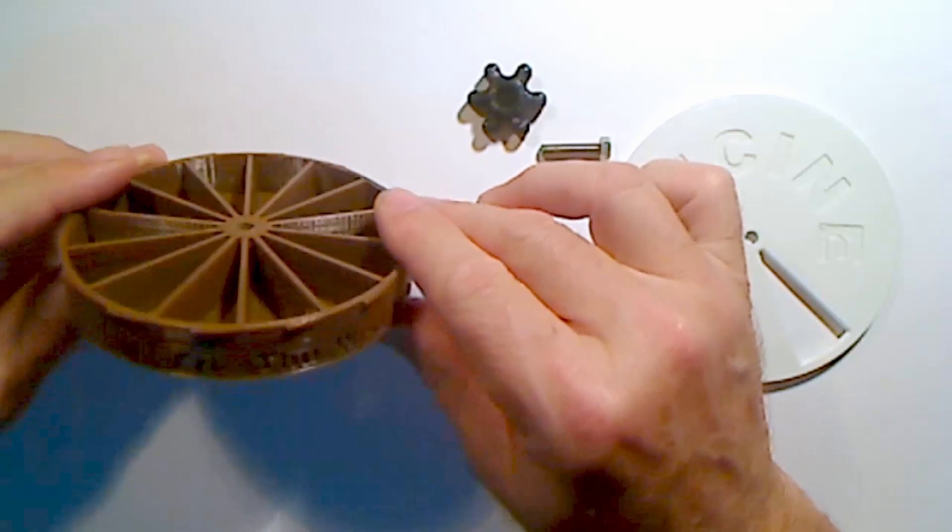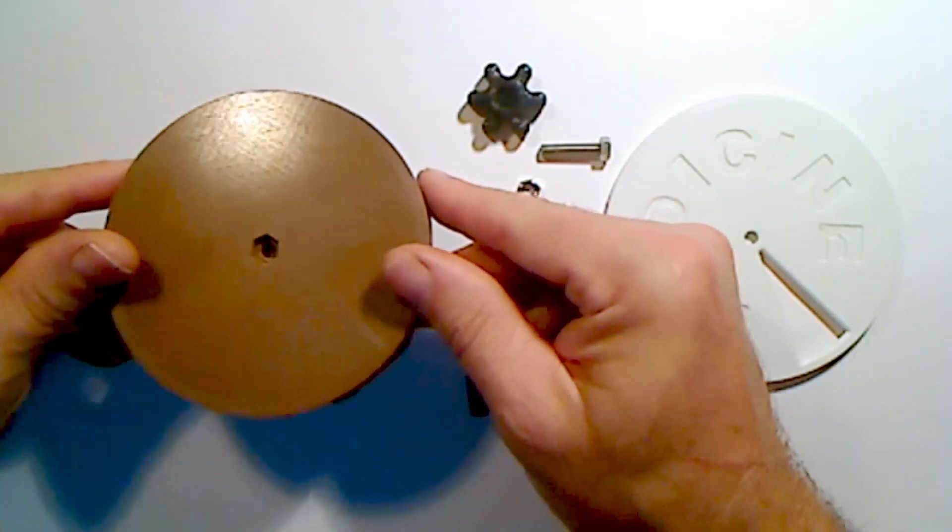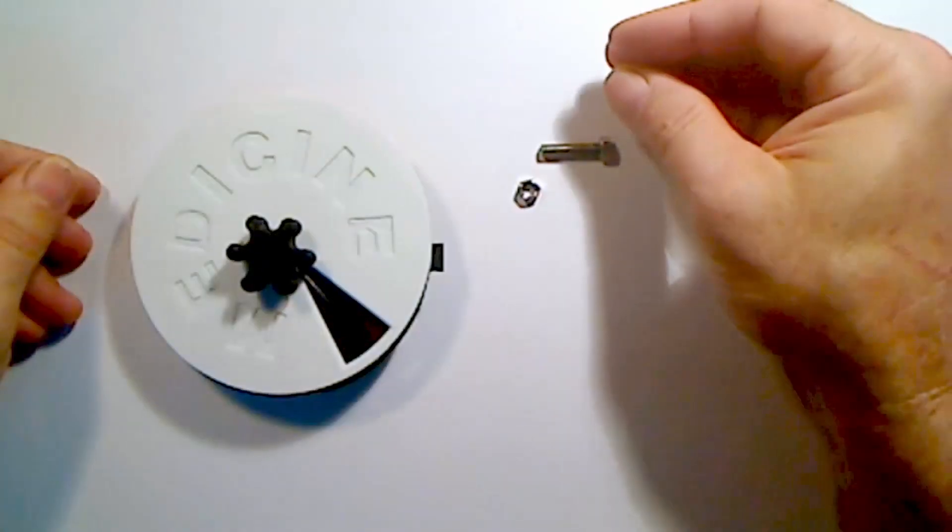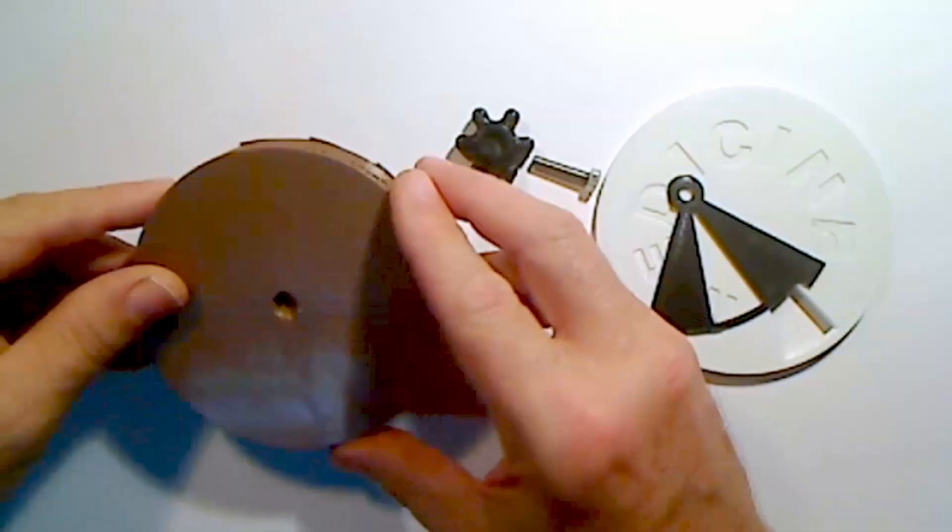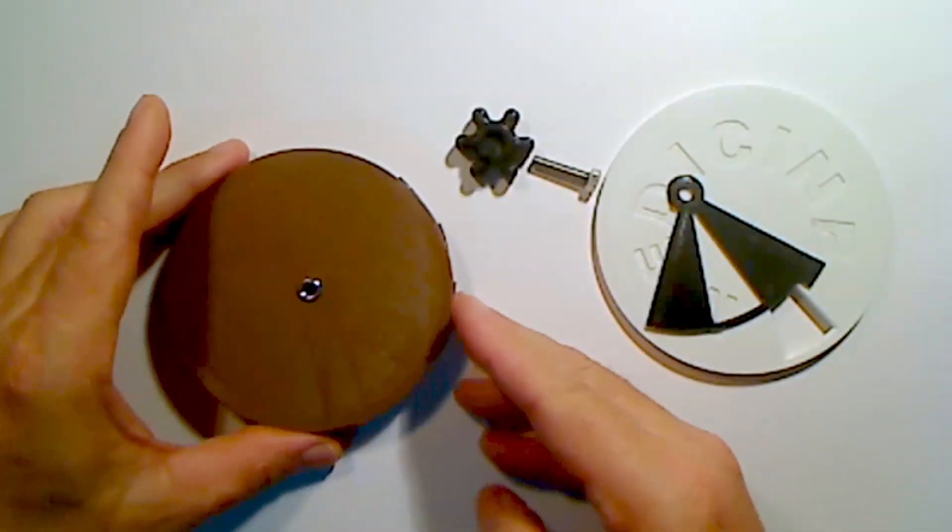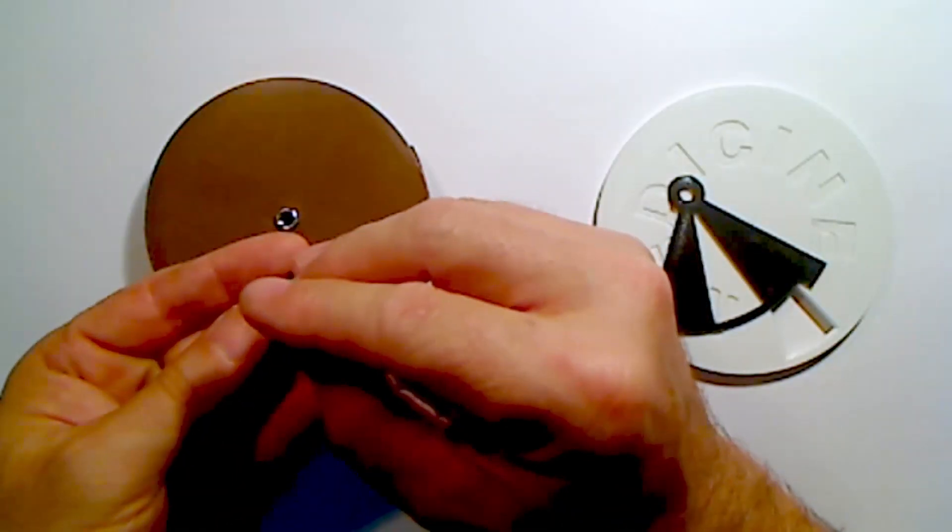Once you have the various 3D printed parts - the dispenser container, the dust lid, the container lid, the knob, and finally a 35mm hex bolt and nut - the assembly first requires gluing the hex nut into the bottom of the dispenser container, then gluing the hex bolt into the knob.